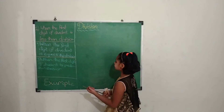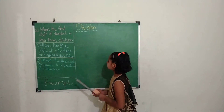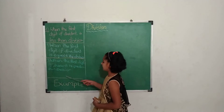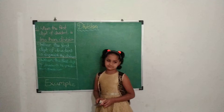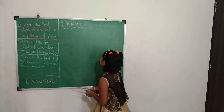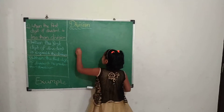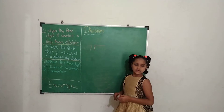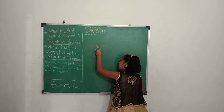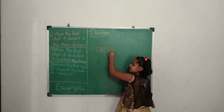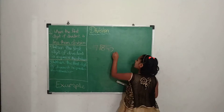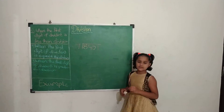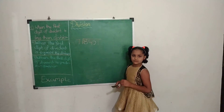Now the third type: when the first digit of the dividend is greater than the divisor. Our question is 7401 divided by 7. Now we write the table of 7, starting from 0.